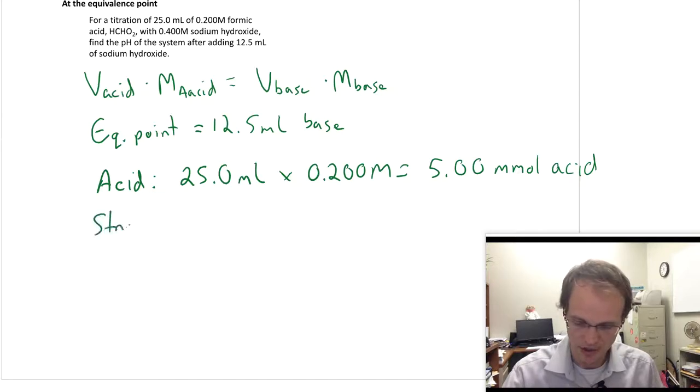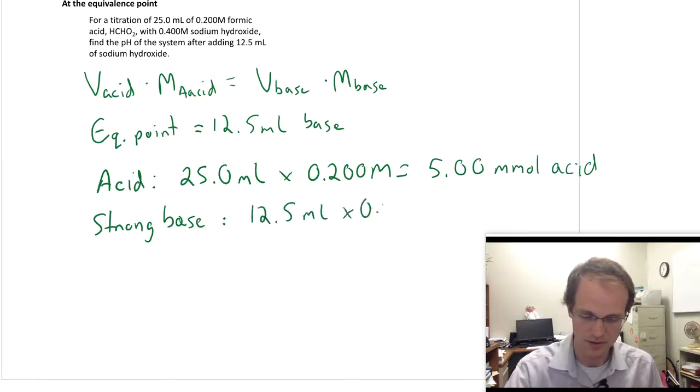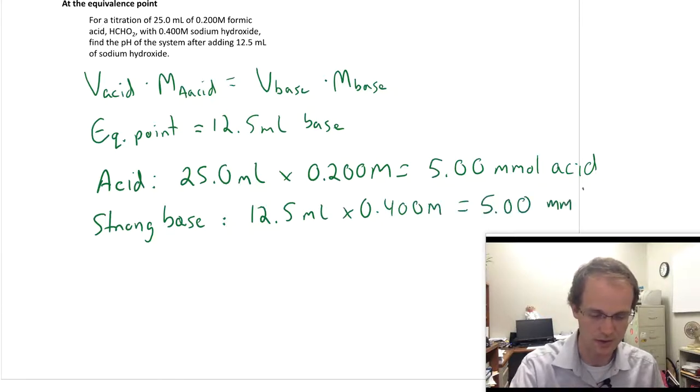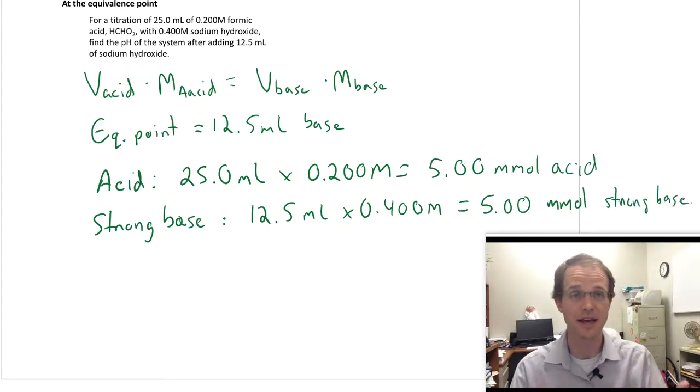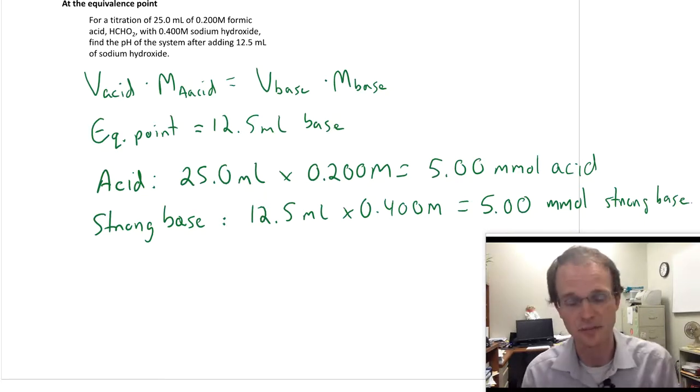For my strong base, which is my sodium hydroxide in this case, I have 12.5 milliliters and I have 0.4 molar. And so I find I've got 5.00 millimoles of strong base, which is exactly what I expected. I expected the acid and the base to be equal, because that's what we mean by equivalence point.